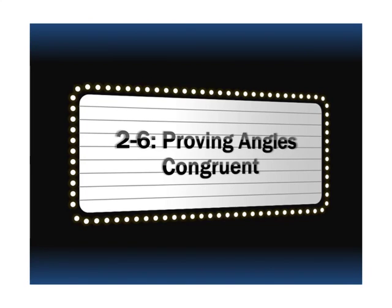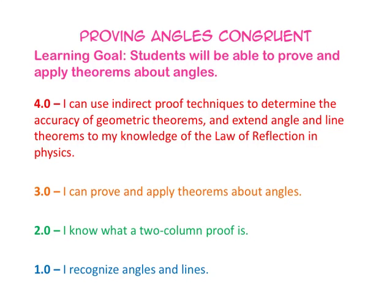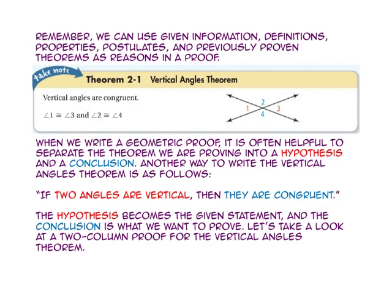Today's lesson is proving angles congruent. Take a minute to look over the learning goal and read the scale and see where you are before we start the lesson. In lesson 2-5 we learned we can use given information, definitions, properties, postulates, and previously proven theorems as reasons in a proof.